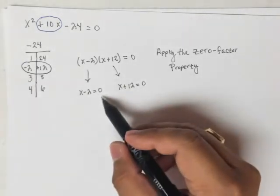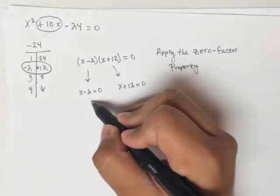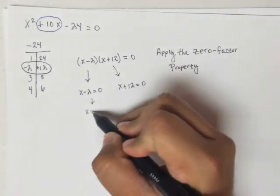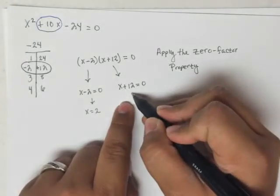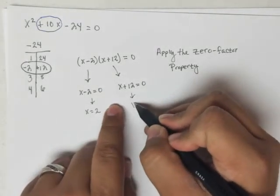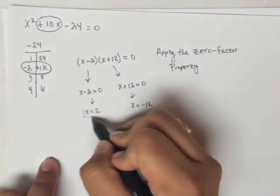So, if x minus 2 equals 0, in this more elementary equation, then all I have to say is x equals 2. And if x plus 12 equals 0, then I can solve this elementary equation, and say that x equals negative 12. So, here are my two answers.